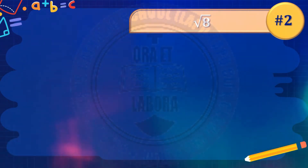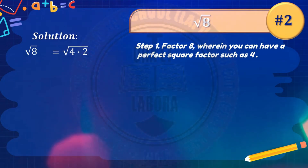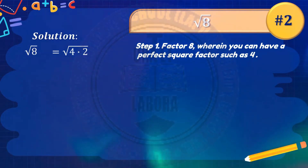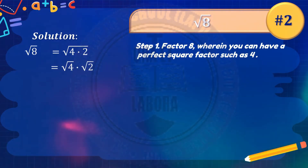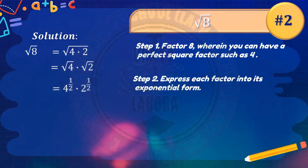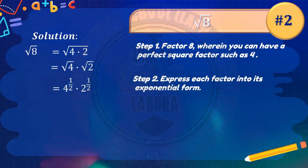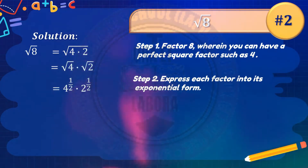Number 2: square root of 8. Find a factor of 8 that includes a perfect square, such as 4. The remaining factor is 2. So we have the square root of 4 times the square root of 2. Express each factor into its exponential form: 4 raised to 1 half times 2 raised to 1 half — that is the exponential form of square root of 4 and square root of 2.